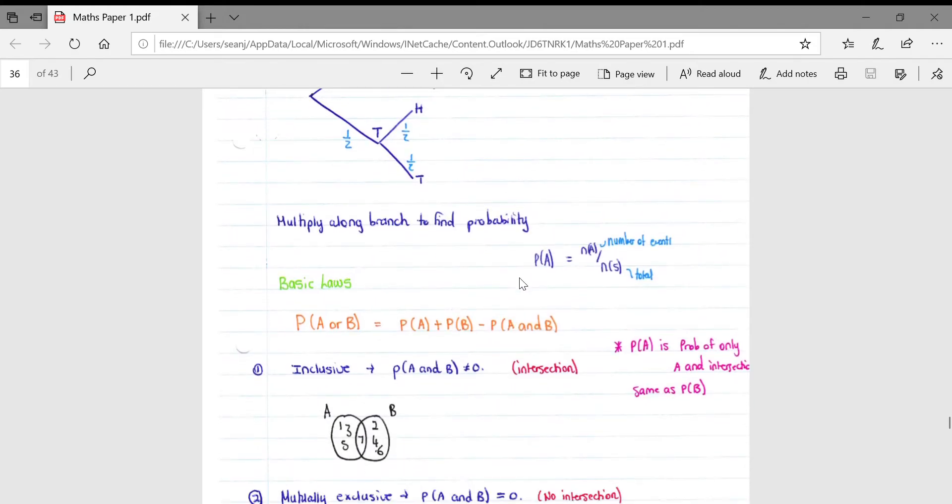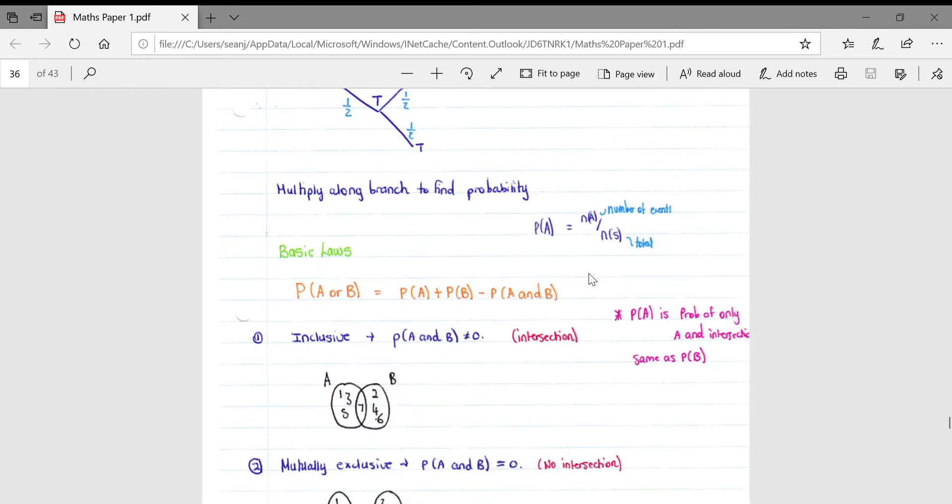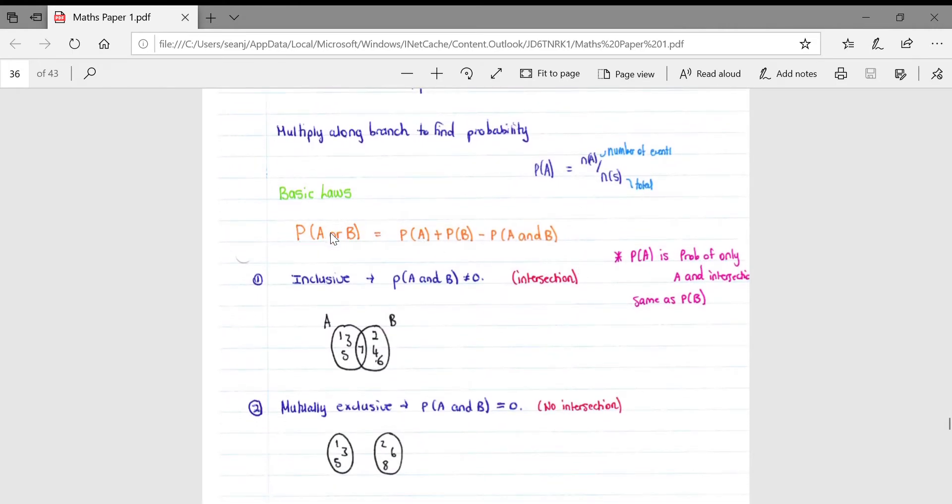Then some basic laws around conditional probability. First of all, what's important to note is this formula, very important: probability of A or B is equal to the probability of A plus the probability of B minus the probability of A and B.